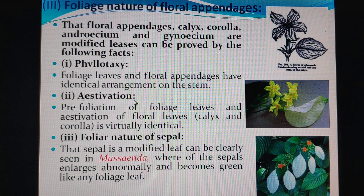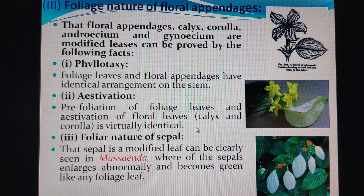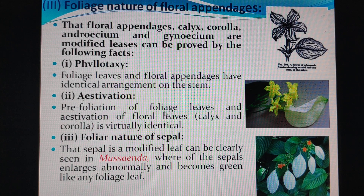Second is estivation, which you will have studied previously. Estivation is how the floral parts — calyx and corolla — are arranged if you take a transverse section, whether in valvate, twisted, or imbricate condition. If we look at the foliage leaves in the bud condition and compare them with the floral leaves — calyx and corolla — the estivation of the foliage leaves and the estivation of the floral leaves are also similar.